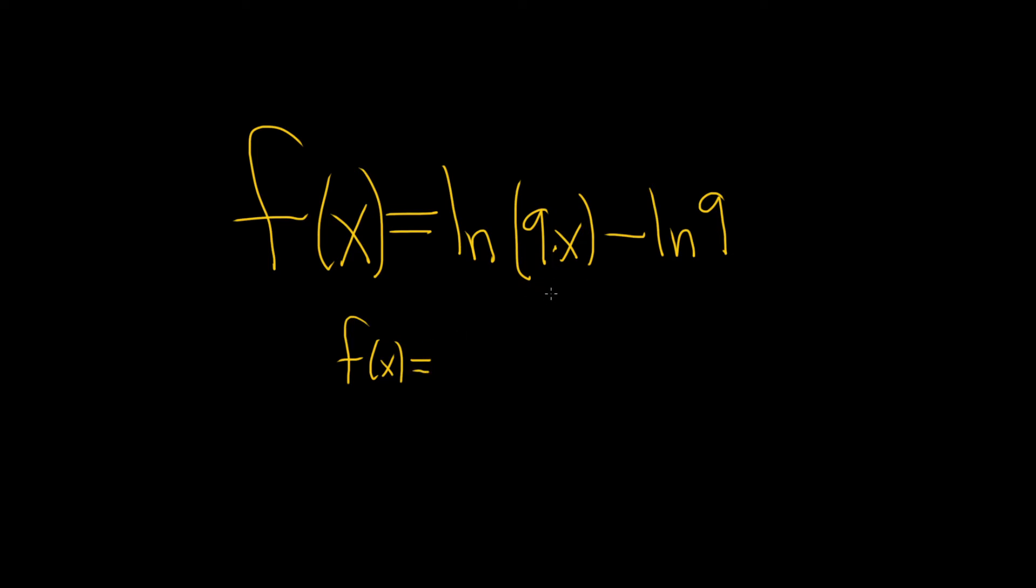So the product rule for logs says that whenever you have times, it turns into plus. So you have natural log of 9x, we can write that as the natural log of 9, and then plus the natural log of x, and then minus the natural log of 9.